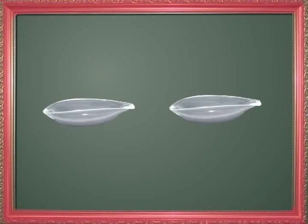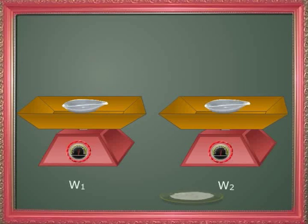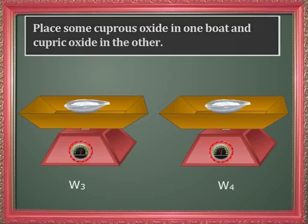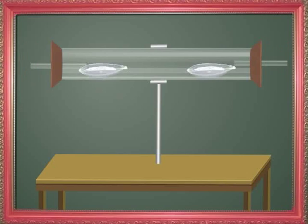Now let me take you through an experiment and explain how this law holds true for chemical changes. In this experiment we take two clean and dry porcelain boards and weigh each of them. We then introduce these two boards into a combustion tube, fix two single-hole rubber cocks carrying glass tubes at both ends, and fix the combustion tube on a stand. You can see the setup of this experiment in the image.